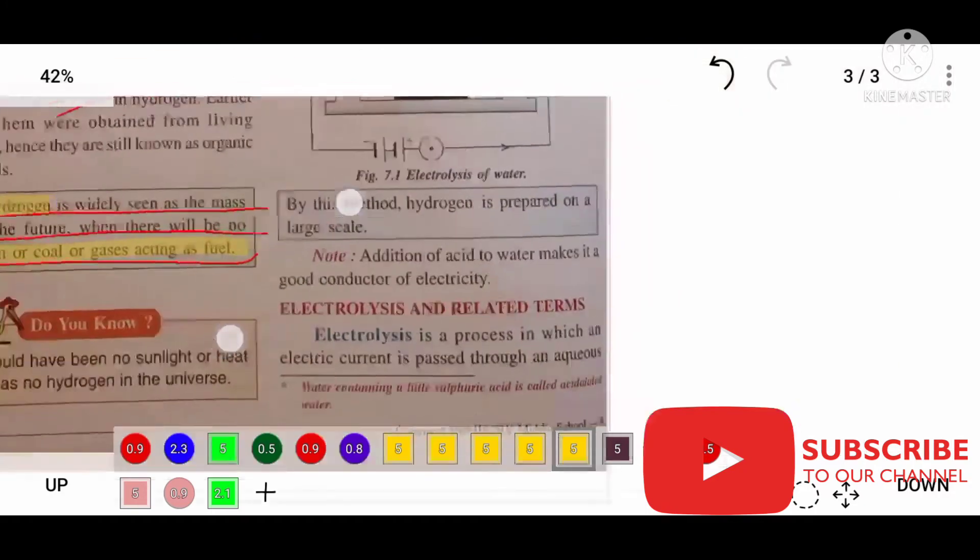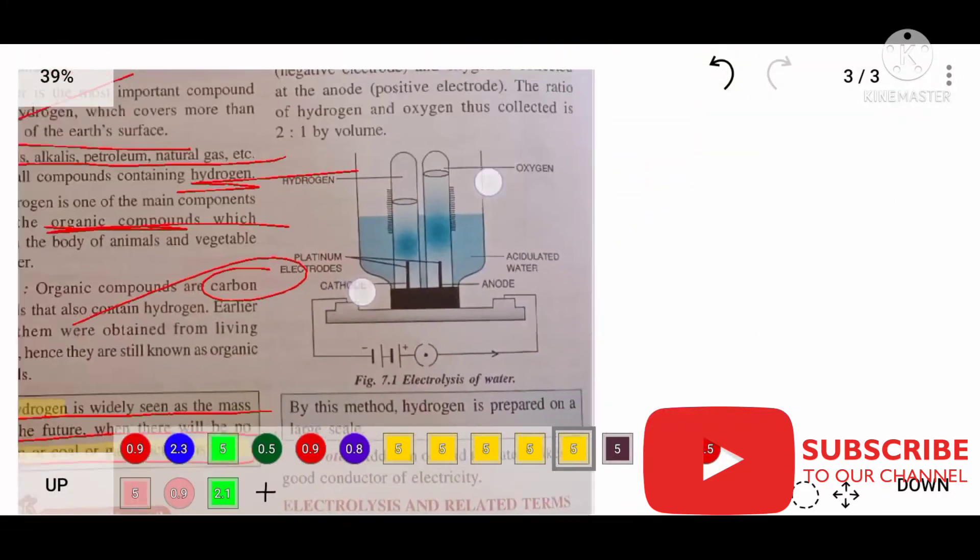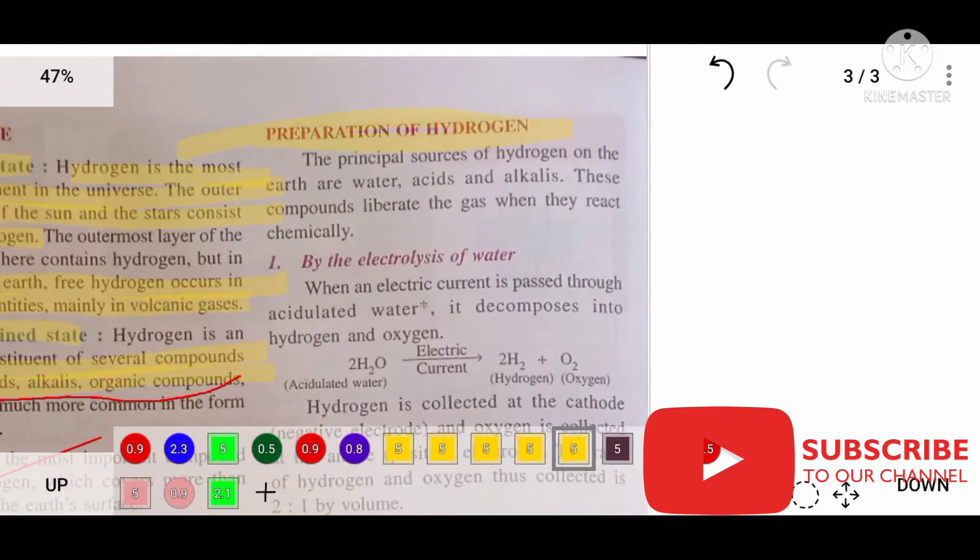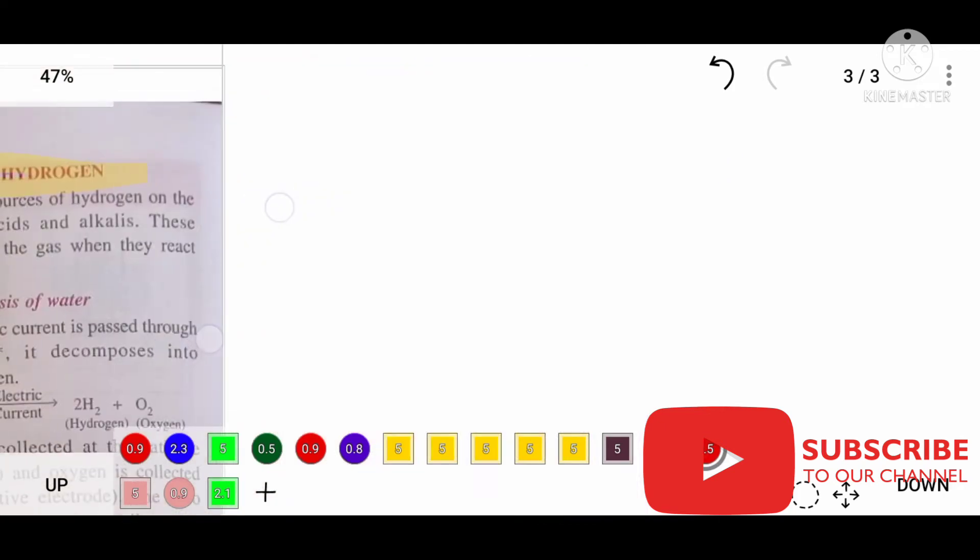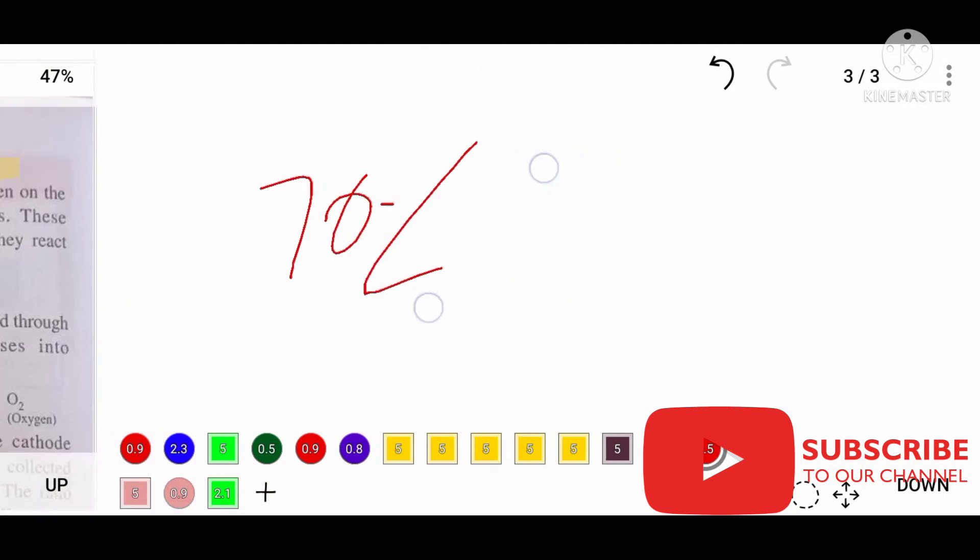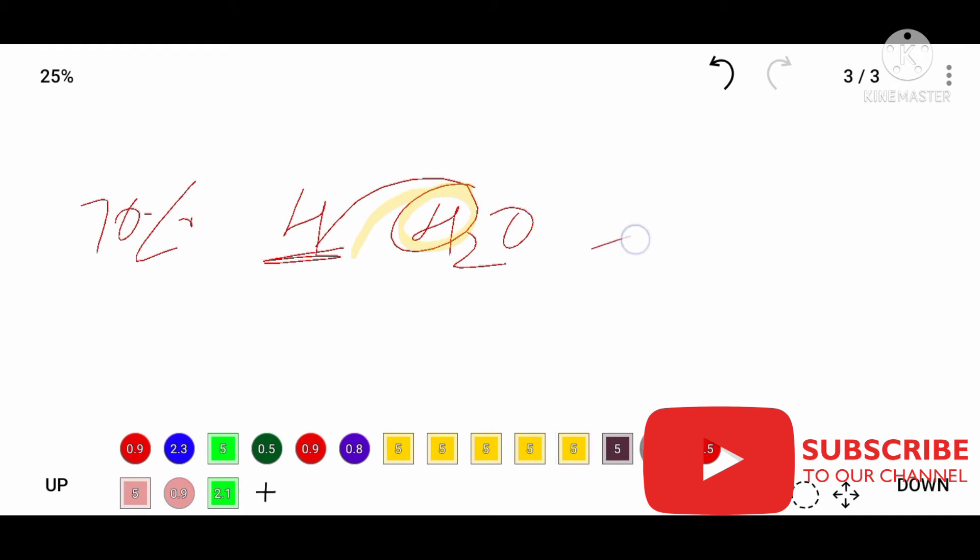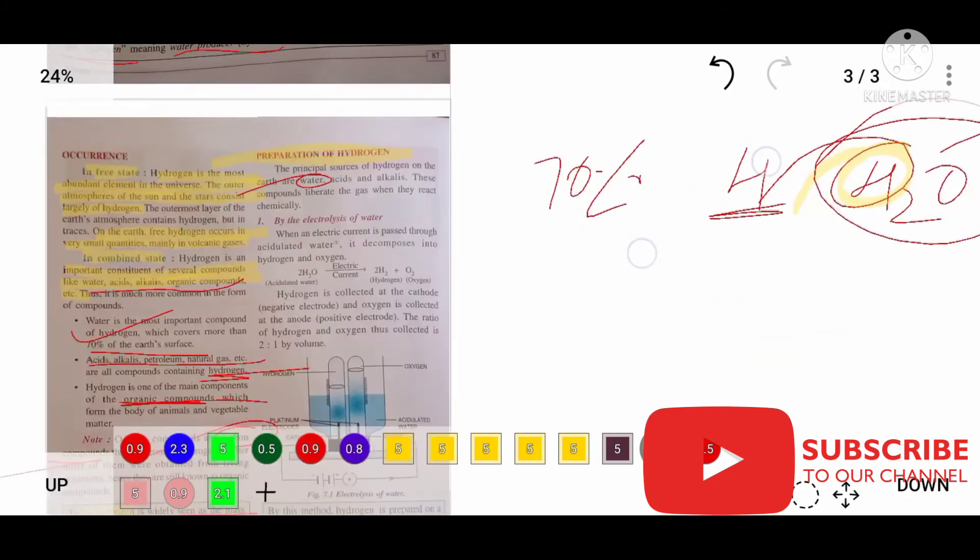Preparation of hydrogen is a very important topic in this chapter. The principal source of hydrogen on Earth is water, because 70% of the Earth is covered by water. Water is made up of hydrogen. If we do a chemical reaction with water, hydrogen can be extracted. Let us study this process.